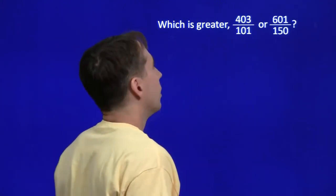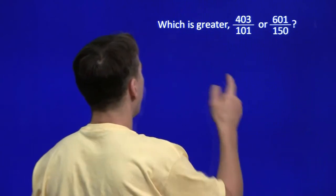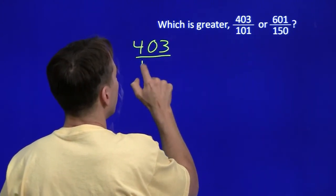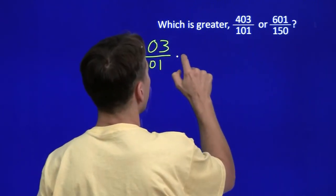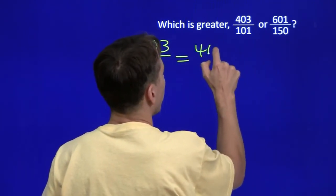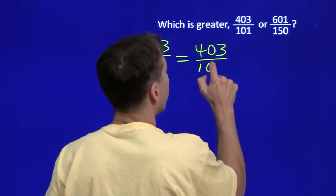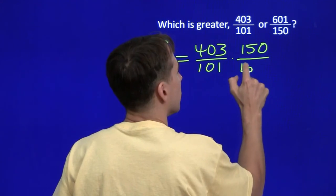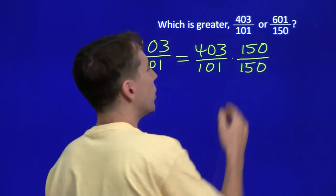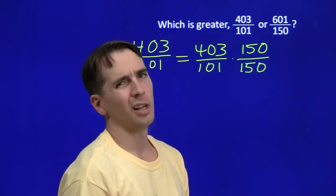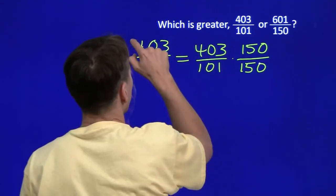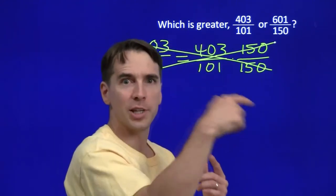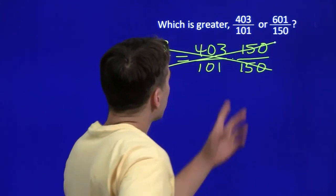How about this one? Well, these denominators aren't nearly as bad. You know, we can go ahead and find a common denominator here. 403 over 101. We start off by multiplying that by 150 over 150, because we want to get the common denominator. And let's see, 403 times 150. Yeah, life's too short for that. Forget this. There's got to be a better way to do this. Fractions are numbers. Let's think about that. That helped us out with the last two problems. Fractions are numbers. Check this one out.